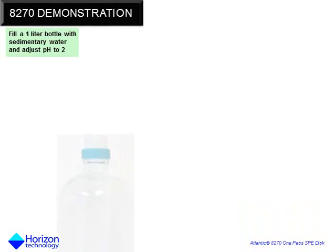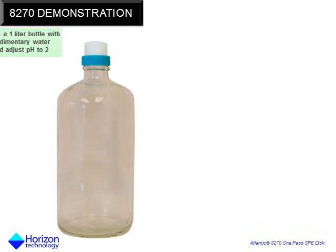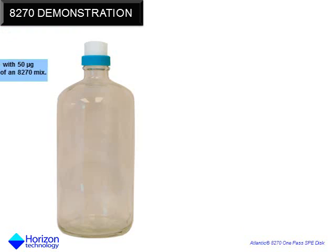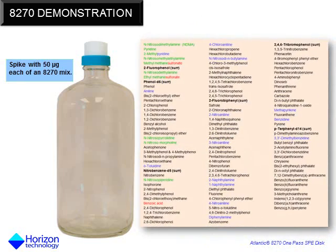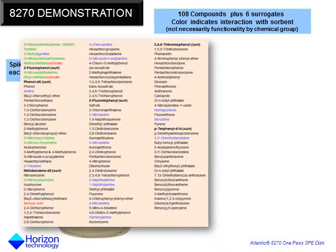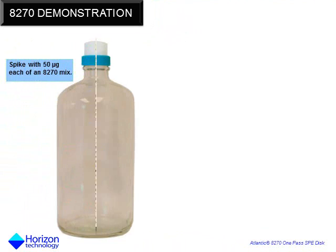This is a demonstration of the 8270 one-pass solid phase extraction process. A one-liter bottle is filled with synthetic wastewater and adjusted to pH 2. 108 compounds plus 6 surrogates are spiked into the water at 50 microgram concentrations. The red dots represent acids, blue dots represent bases, neutrals are shown as black dots, and light end compounds are shown in bright green.